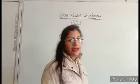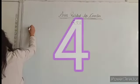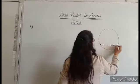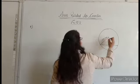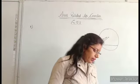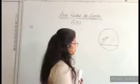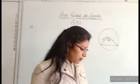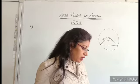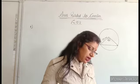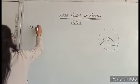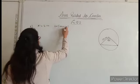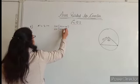So what is question number 4? A chord of a circle of radius 10 cm subtends a right angle at the center. Then find the area of the corresponding minor segment and major segment. The value of pi is given as 3.14.